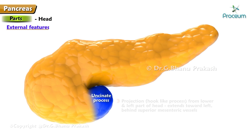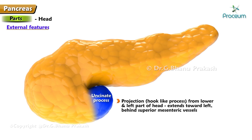The uncinate process is a hook-like projection from the lower and left part of the head, which extends towards the left behind the superior mesenteric vessels.